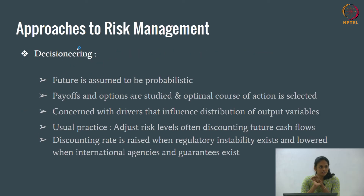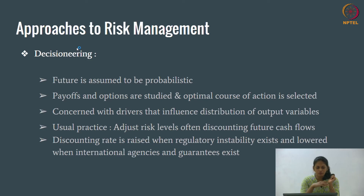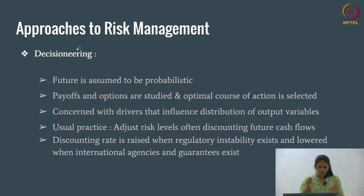Approaches to risk management: there are two ways to manage risks — decisioneering and the managerial approach. In decisioneering, you assume the future is probabilistic. You think of different options and payoffs and select an optimal course of action. The usual practice is to adjust risk levels, often by discounting future cash flows. In the managerial approach, you don't assume the future is probabilistic — you have no idea about it.